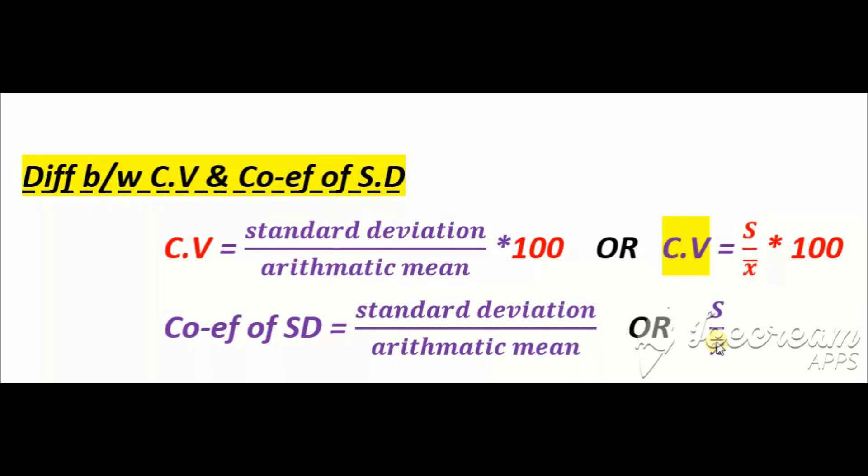But when s divided by x̄ is multiplied by 100, then it becomes coefficient of variation. So this is the very smallest difference between these two formulas, coefficient of variation and coefficient of standard deviation.